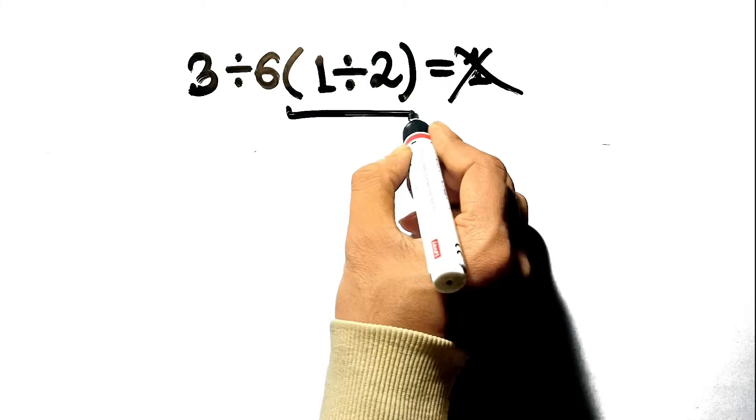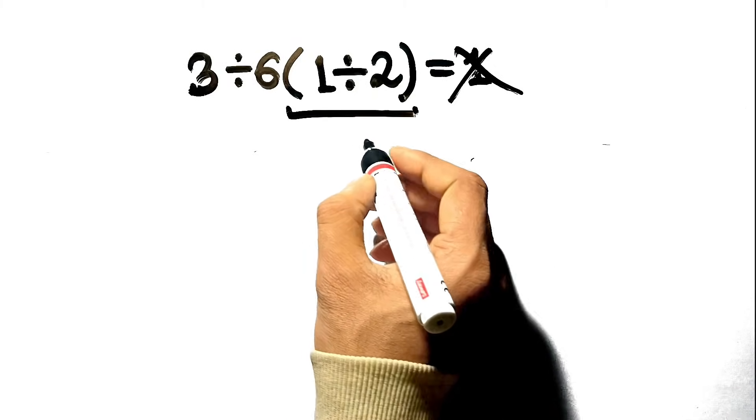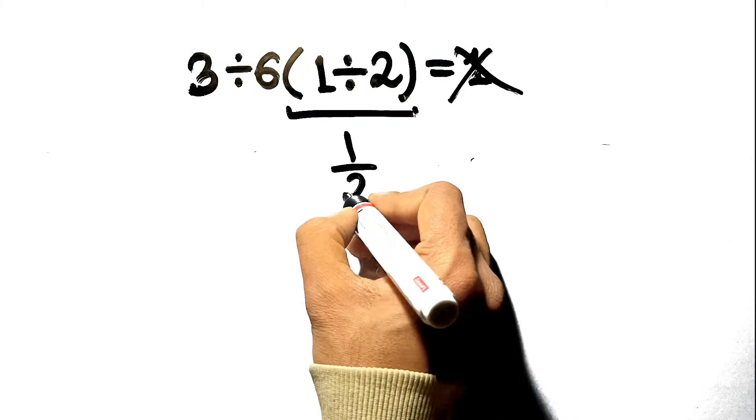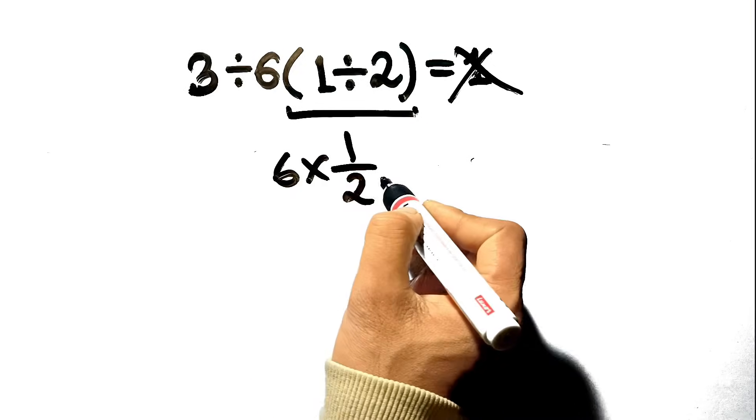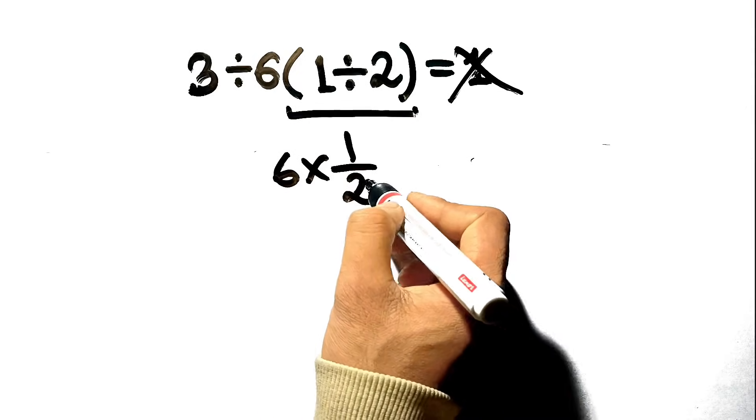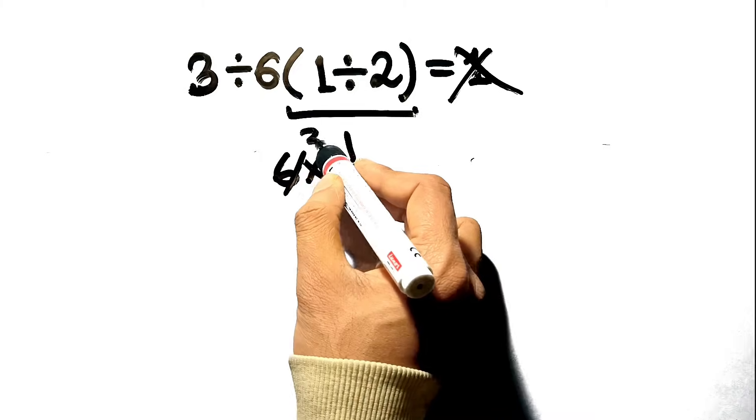First, they look inside the parentheses, 1 divided by 2, which is 1 half. Then they see the 6 right next to it, so they think the entire multiplication, 6 times 1 half, must be done next, giving them 3.